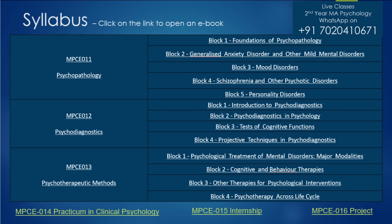For example, if you show a client an ambiguous picture and they say: 'This is a small boy, he looks very poor, everybody abuses him, he's a neglected child, he has no father or mother' — from this story you can get a hint that the person may have undergone the same pain at some stage in their own life. They are projecting their own emotions through the test.